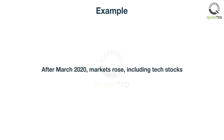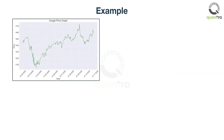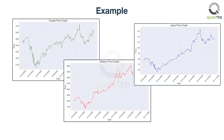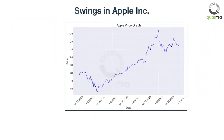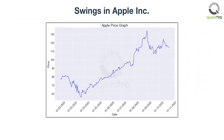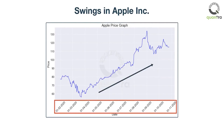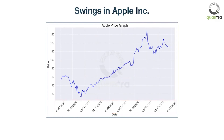Let's see an example. After March 2020, we have seen the markets rising. Many tech stocks like Google, Amazon, and Apple have seen a stellar rise. Look at Apple prices in the chart to see the overall price direction and fluctuations. On a scale of months, the price is increasing in this time period. But if you look closely, you can see the rise is not a straight line, but a zigzag.